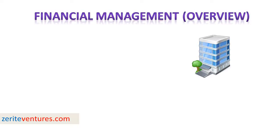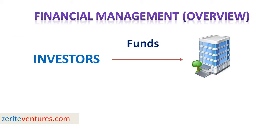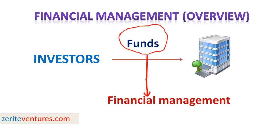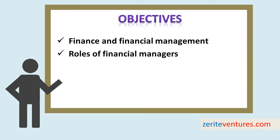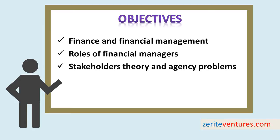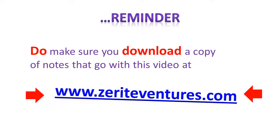Hello guys, Zer here. A firm requires resources in the form of funds raised from investors in order to meet its day-to-day activities. Financial management ensures that resources are allocated to projects which will yield the highest returns. By the end of this lesson, you should be in a position to explain finance and financial management, what financial managers do, and stakeholder theories and agency problems. Do make sure you download a copy of notes that go with this video. Such can be found at zerightventures.com or the link provided in the video description.